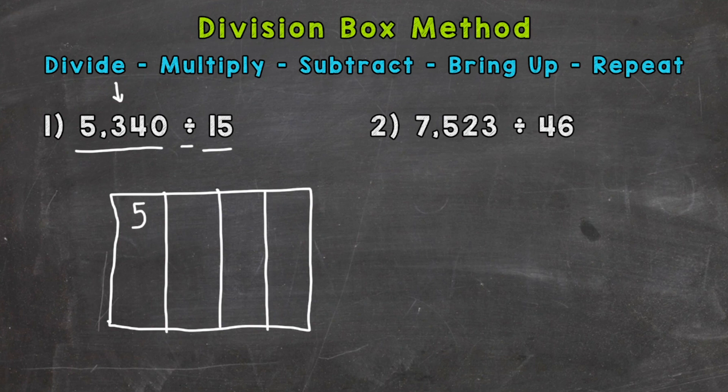So we split into four sections because our dividend has four digits. So let's write a digit in each section. So 5,340. And we put our divisor, that 15, on the outside.